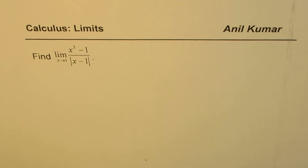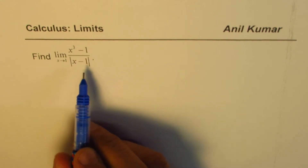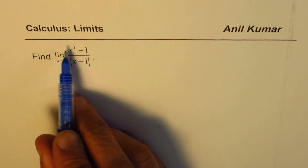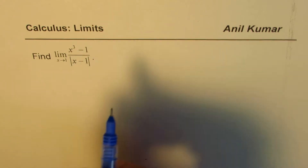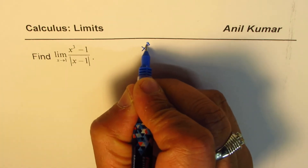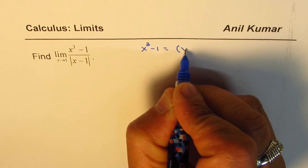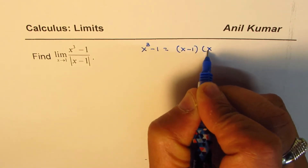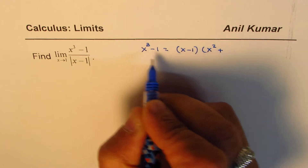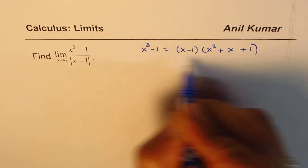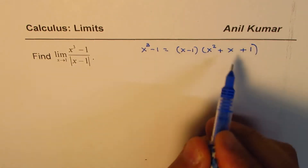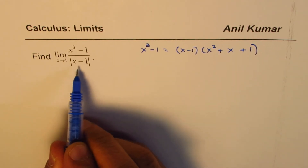In this particular question we'll use two things. First, how to factor x cubed minus 1. We can factor x cubed minus 1 as x minus 1 times x squared plus x plus 1. That is how we can factor this. The second part is to redefine the absolute value function as a piecewise function.